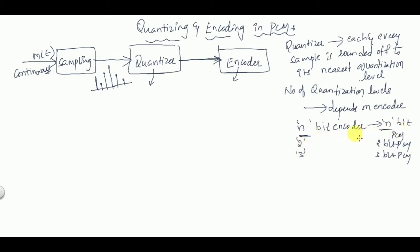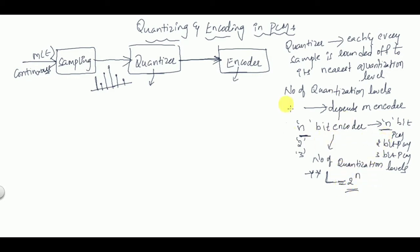Therefore, if you have n-bit PCM, the number of quantization levels should be equal to 2 to the power n, represented by L. So L = 2^n. This is very important to remember. If it is an n-bit encoder, each sampled value is converted into n bits, and therefore the number of quantization levels is 2^n. For example, if n = 2, the number of quantization levels is 4.